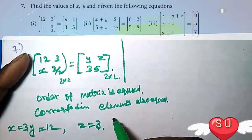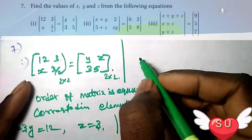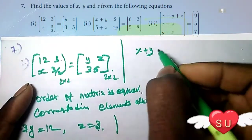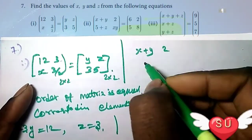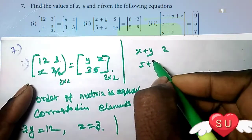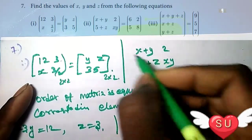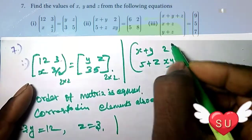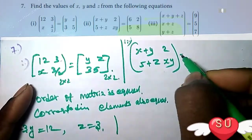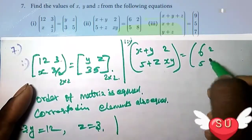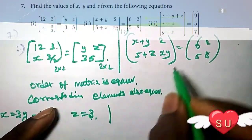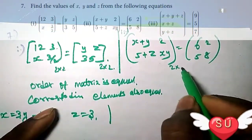In the second problem, the matrix is x plus y, 2, 5 plus z, x y equal to 6, 2, 5, 8. The order of matrix is 2 into 2 and 2 into 2.